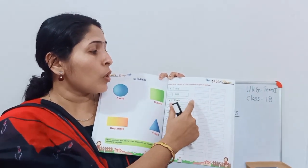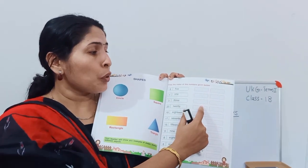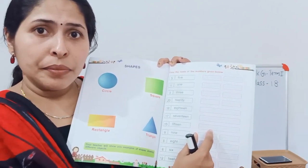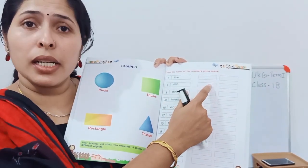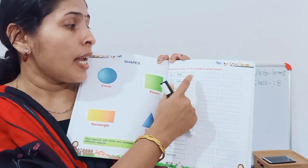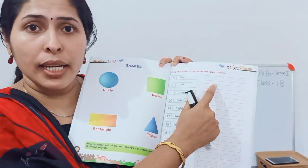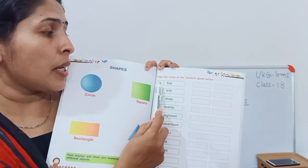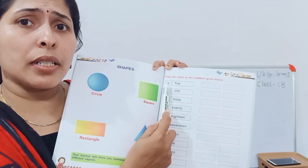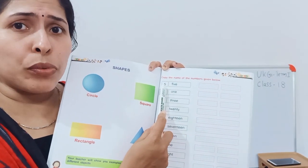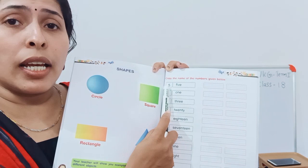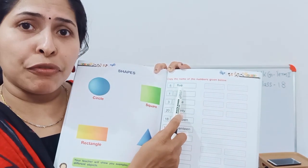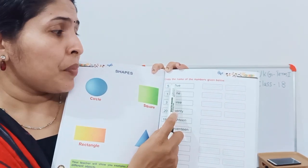That is the number with 4 lines. How many are there? Let us count how many there are. The number is 5.